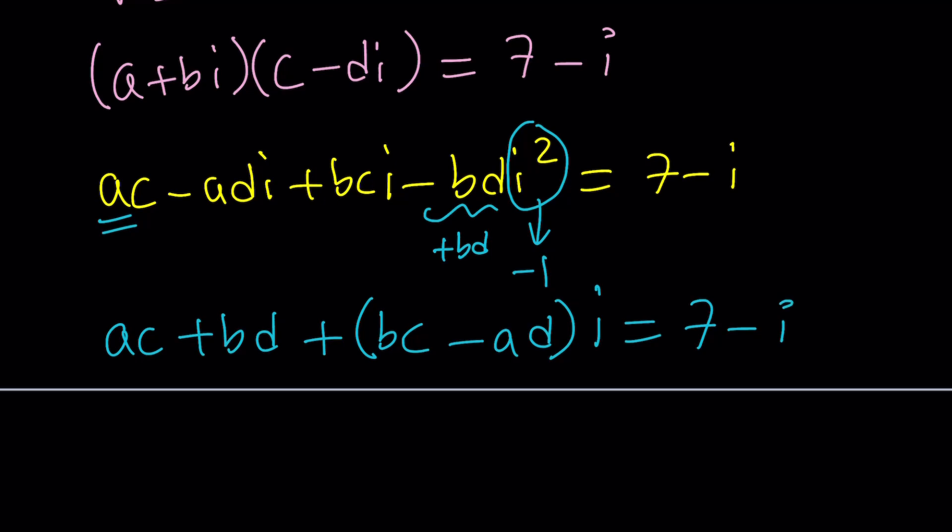Add that to ac because that's what makes up the real part of this complex number. So it's going to be ac plus bd plus bc minus ad, times i, equals 7 minus i. For equality of two complex numbers, real parts equals real parts and imaginary parts equals imaginary parts. So this is 7, and the coefficient of i on the right is negative 1.